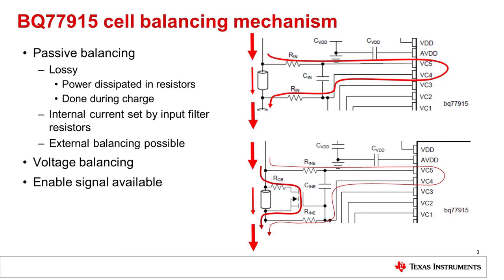The BQ77915 uses passive cell balancing. Current, which would normally go into the cell, will be directed around the cell. Power is dissipated in resistors.